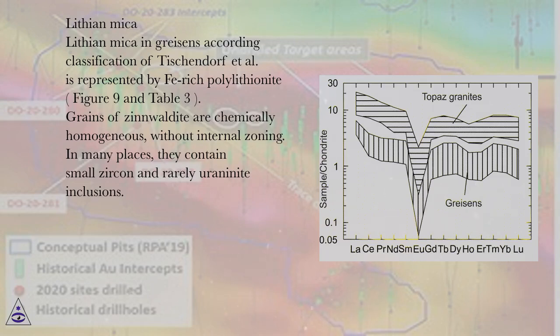Lithium mica in greisens according to classification of Tischendorf et al. is represented by Fe-rich polylithionite, figure 9 and table 3.